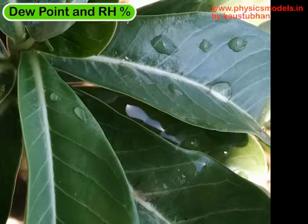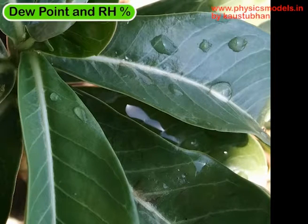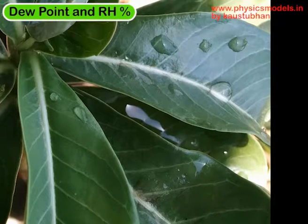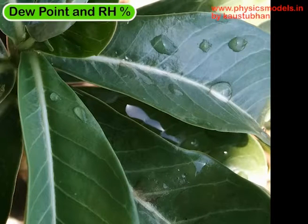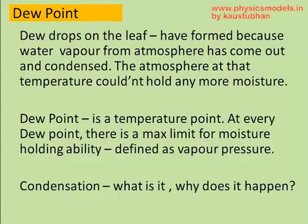In this video I'll explain about dew point and relative humidity in an easy to understand manner. In this image you can see water drops having formed on leaves. The same thing can be observed on grass as well on winter mornings. This is called the condensation of water and these are called dew drops, which leads us to the term dew point.